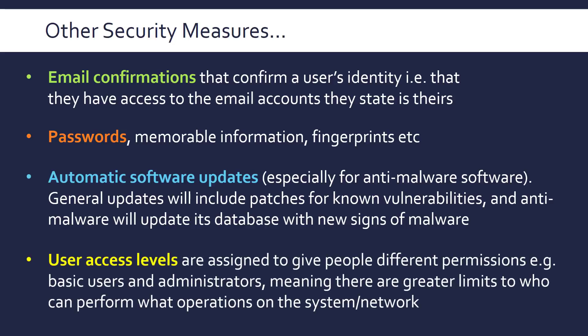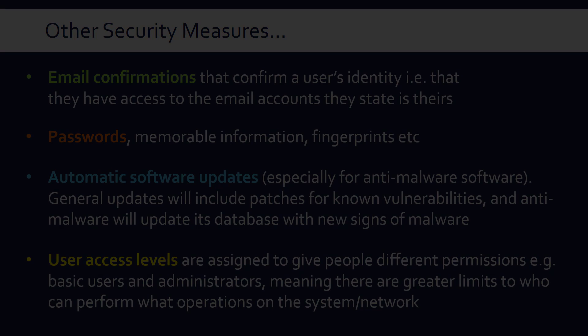Another common measure is user access levels, where different permissions are applied to different people. Some people will be basic users with no access to the database or certain areas, while administrators may have full access. This limits what people can do. Since people are the weak points in systems, this limits more irresponsible people from having access to the more secure data.